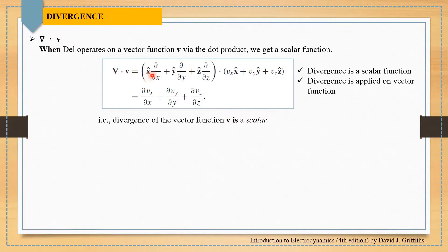Del dot v equals (x-cap ∂/∂x + y-cap ∂/∂y + z-cap ∂/∂z) dot v. By taking the dot product between these two expressions, we get ∂vx/∂x + ∂vy/∂y + ∂vz/∂z, which is nothing but a scalar. Hence, divergence of a vector function is nothing but a scalar number.